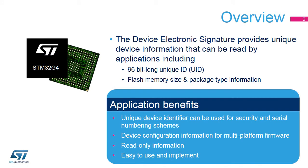The Device Electronic Signature provides a set of registers containing die identification, unique device identifier or UID, and other read-only device information, such as memory size, package type, and device calibration information.